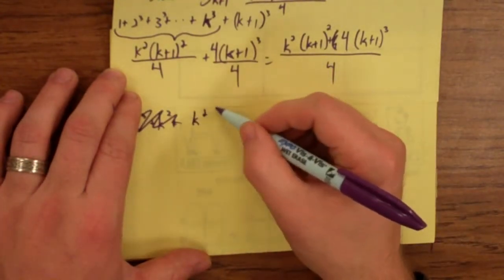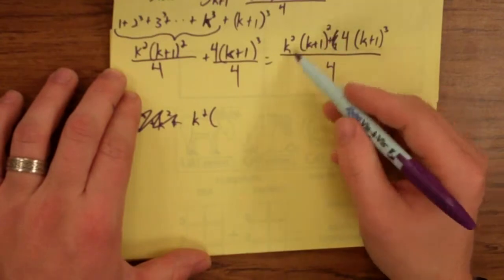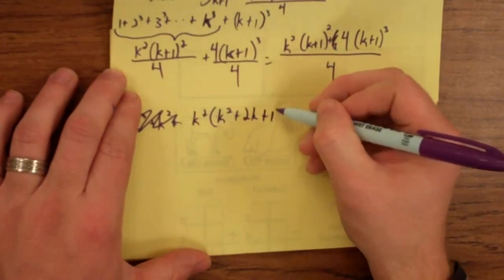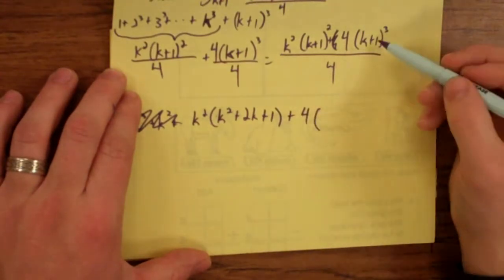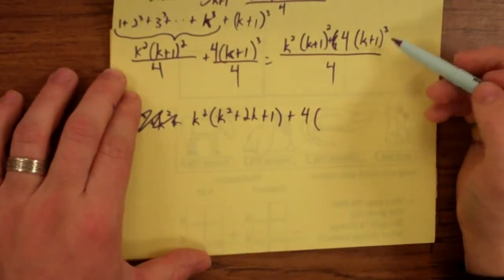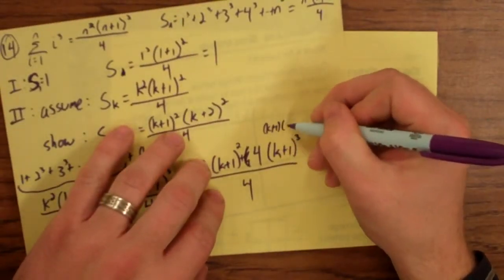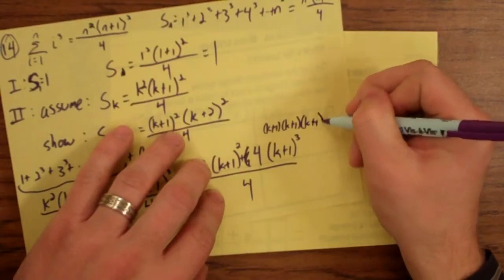So let's try again. This is k squared times. Now we need to just foil this. So this is k squared plus 2k plus 1 plus 4 times, well, we need to multiply this by itself three times. We need to do this. k plus 1 times k plus 1 times k plus 1.